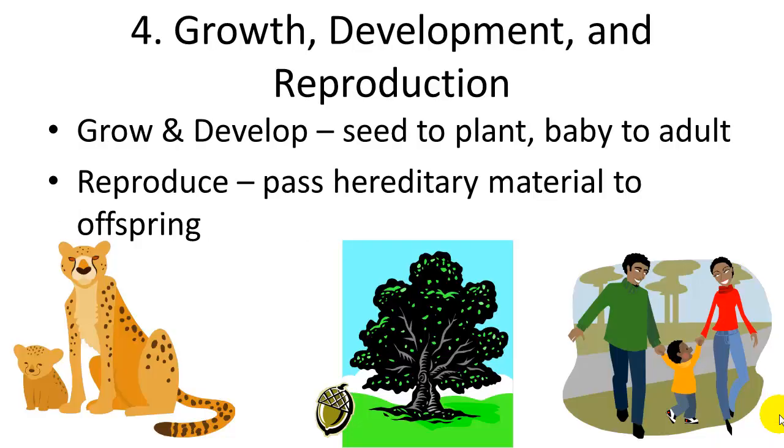The fourth characteristic is growth, development, and reproduction. All living things have the ability to grow and develop from a seed into a giant oak tree, from a little baby cheetah to a grown-up cheetah, and from a baby into an adult. In addition, all living things are able to reproduce and pass their hereditary material to their offspring.